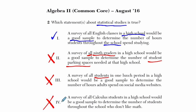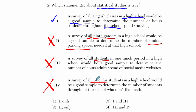For a similar reason, we can cross off the last one. A survey of all calculus students in a high school would be a good sample to determine the number of students throughout the school who don't like math. Just because students are taking calculus — typically an advanced math course — you can't assume they all like math. But you're getting a biased group here: these students have stuck with math and are taking an advanced course, so they don't represent students who might drop math or focus on something else. So the answer is just choice one.